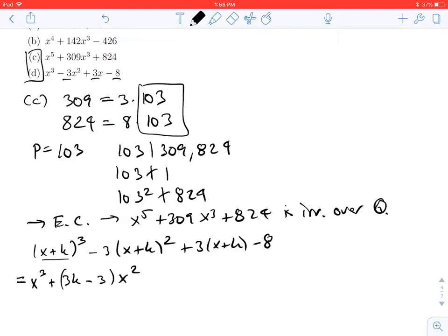For the x terms: we have 3k^2x from the first term, -6kx from the second, and 3x from the third.